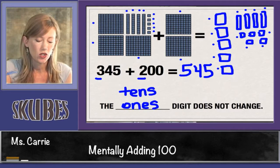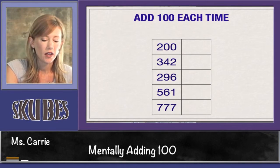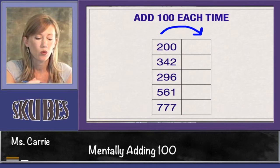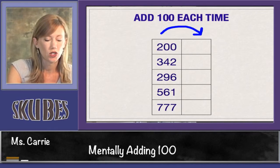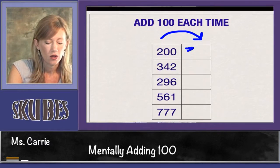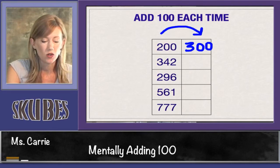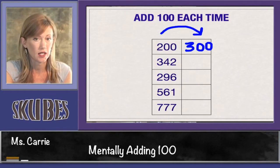Now that we've drawn the pictures out, let's see if we can do it in our head. On this side, on the left side, there's a number. What we're going to do in the right column is add 100 to each of these numbers. So if we add 100 to 200, we get 300. The digit in the hundreds place went up one, but the tens and the ones stayed the same. They stayed zero.